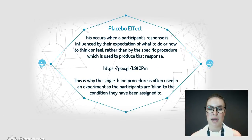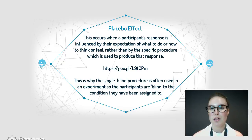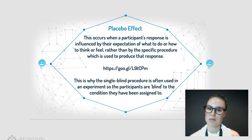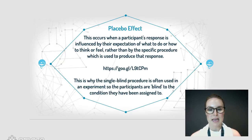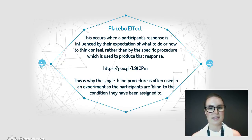The placebo effect is where a participant's response is influenced by what they think they're expected to do or what they're expecting might happen. The researcher wants to find out: is it because they think it's going to work, or is it that the thing being tested has actually worked? For example, someone taking what they think is a Panadol — but it's just a sugar pill — and miraculously their headache goes away. That's basically the placebo effect: when something works purely because someone believes it's going to work.